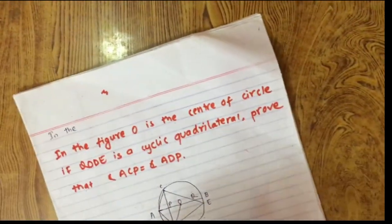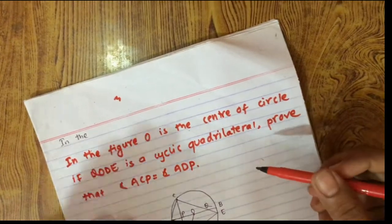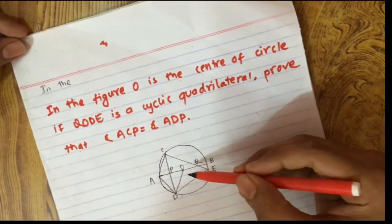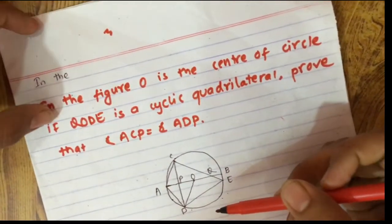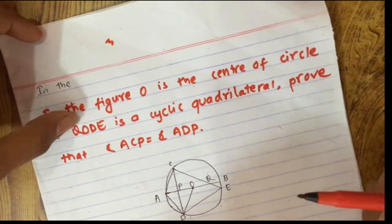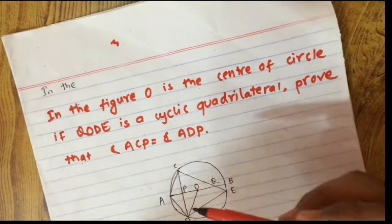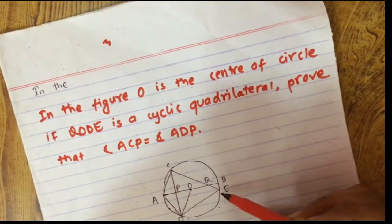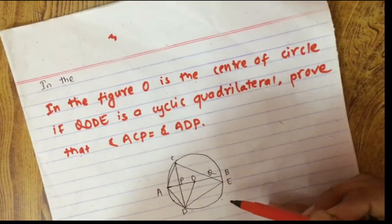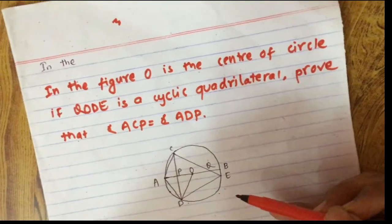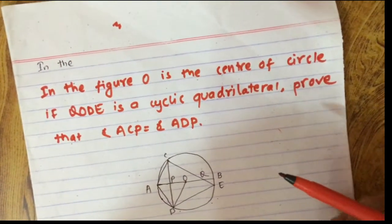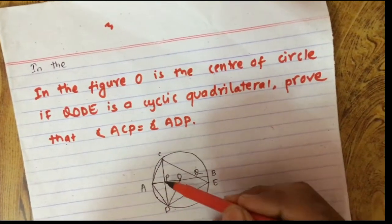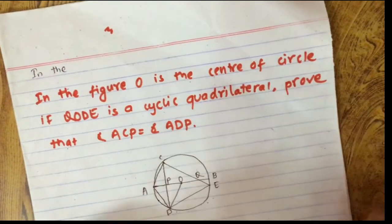You can look at the figure. In the figure, O is the center of the circle. If QODE is a cyclic quadrilateral, we have to prove that angle ACP is equal to angle ADP.